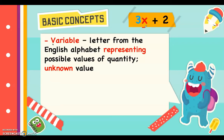Another example: the number of flowers in a garden is represented by x, since we don't know yet the number of flowers. Or the number of students in the class is represented by y, since the specific number of students is not stated.